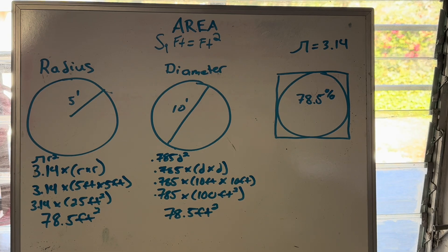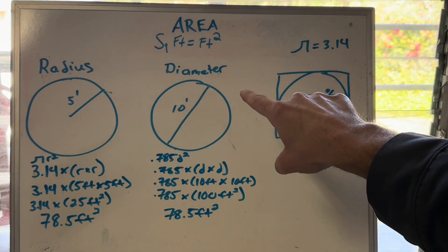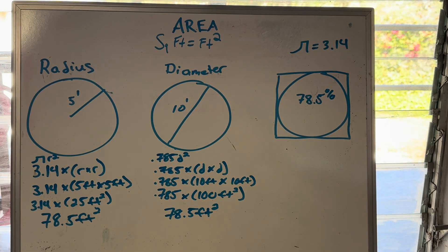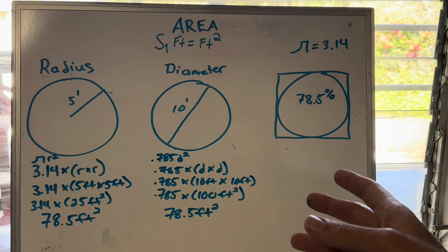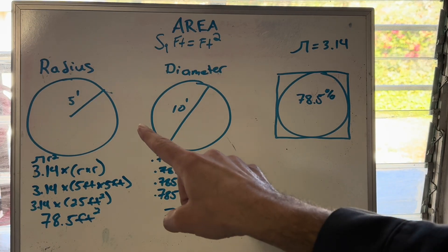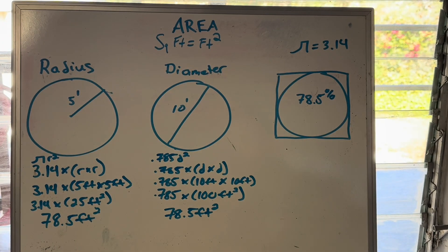Let's talk about the area of a circle in square feet. In front of you, you see a circle with a radius and a circle with a diameter. The diameter is the furthest point to furthest point across a circle — what the linear feet across a circle is. The radius is half of that; it's the center of the circle to an outer edge. You can solve for area using either the radius or the diameter.